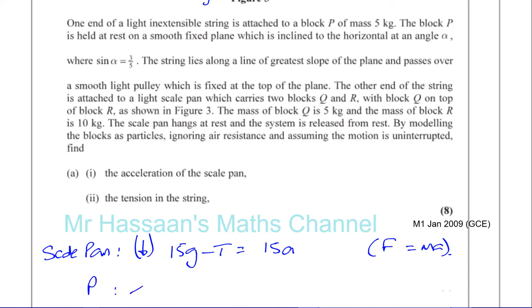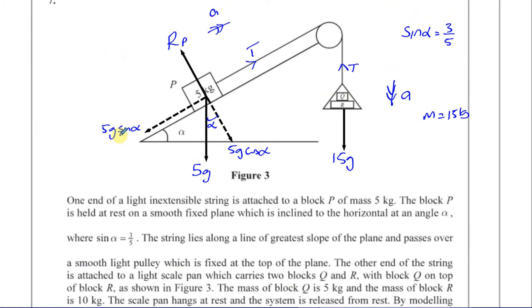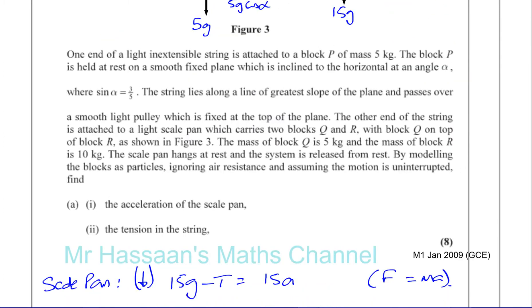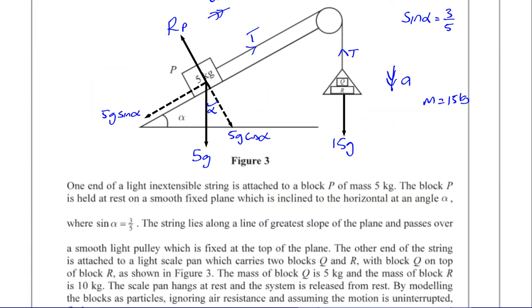I'm going to take up the plane as positive because it's moving in that direction. So I'll have T minus 5g sine alpha equals 5 times the acceleration because the mass is 5 here.